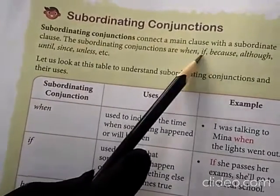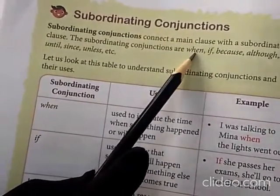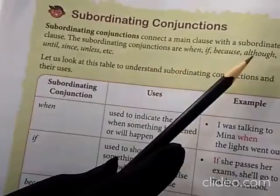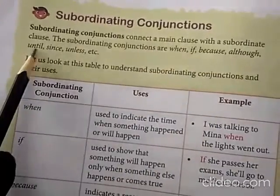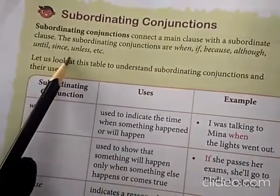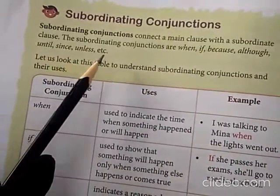Subordinating conjunctions include: if, when, because, although, until, since, unless, etc.